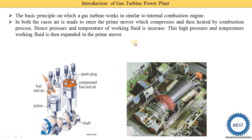After combustion, the high-pressure, high-temperature working fluid expands in the prime mover. In a petrol engine, air and petrol are supplied during the suction stroke, then compression occurs as the piston moves to TDC, the spark plug fires causing combustion, and work is produced. Similarly, in a gas turbine, air enters the compressor, then goes to the combustor for combustion, then the gas is supplied to the turbine where it expands and produces mechanical energy.